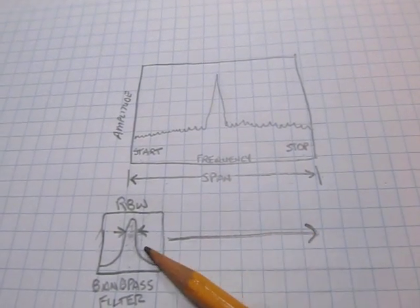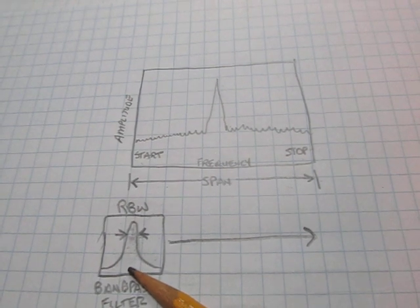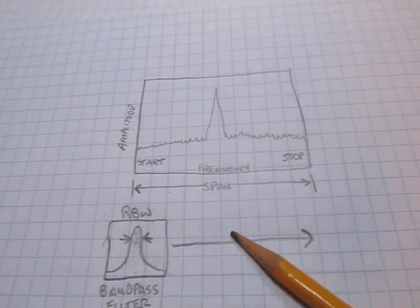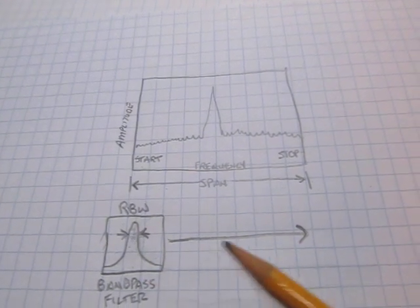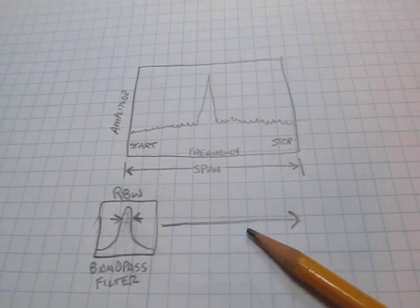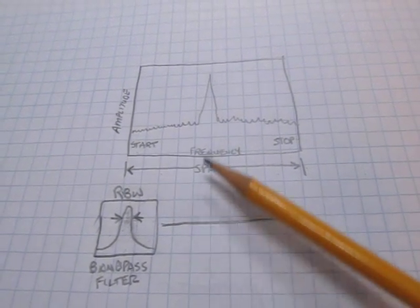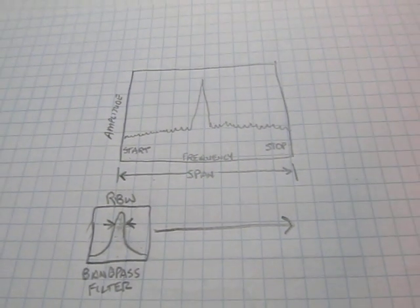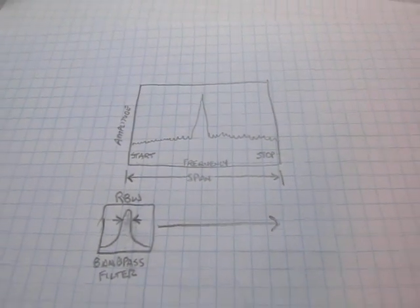Zero-span is quite simply parking that filter at a given frequency and then detecting the amount of power that exists in that filter over time. So it's kind of a time domain view of the amplitude variations of a given signal in that filter. So let's go take a look at what that looks like and how I set it up.